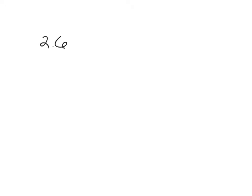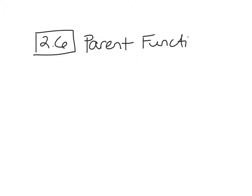All right, so let's get started. We're going to do 2.6 first. The things that we learn in 2.6 are actually going to be the stuff that we're going to do in 2.7 also, but with a different function. So we're going to talk about some parent functions today. We're going to learn three parent functions — two of them in 2.6 and the other one in 2.7.